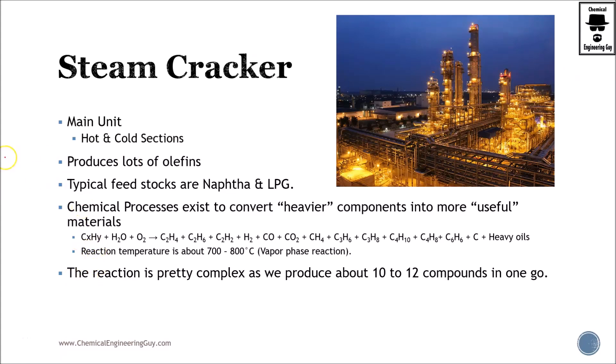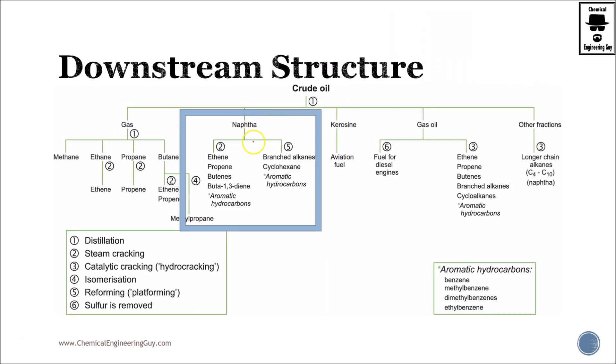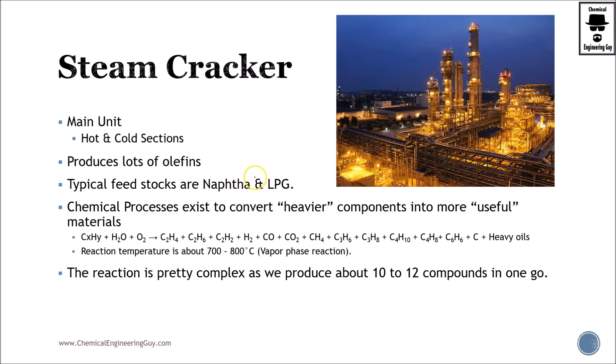Let's talk about the steam cracker, which is the heart of the petrochemical plant. This is the main unit which will be producing the most petrochemicals in the world or in the plant. Remember that we will be using naphtha as raw material, and what we want to do is to obtain the most amount of ethylene, propylene, butylene, and butadiene.